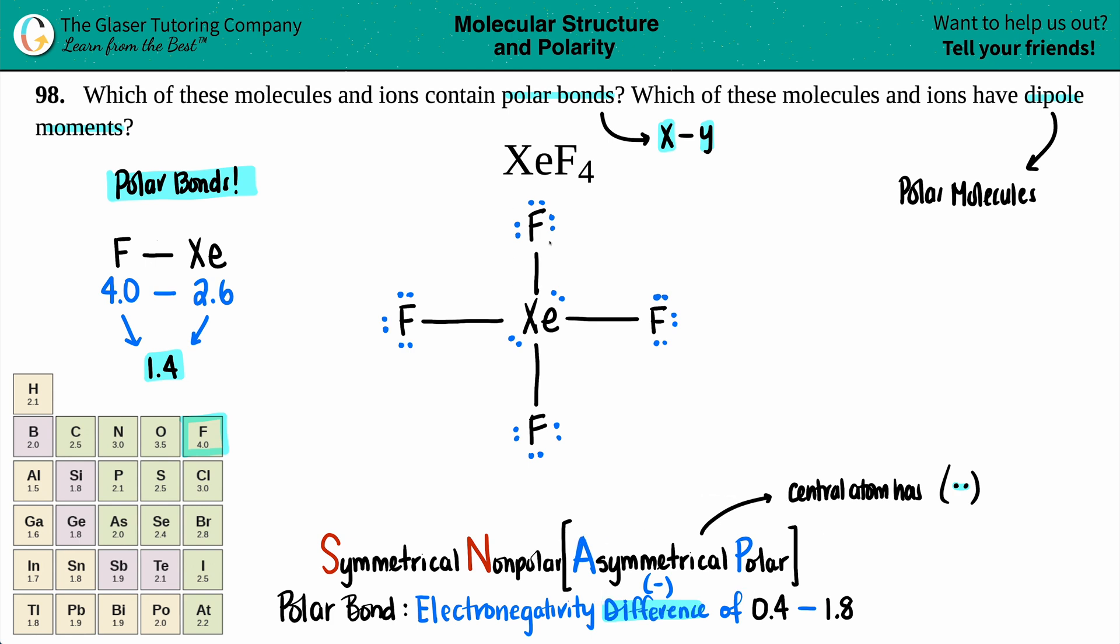So in this case, my central atom is xenon. And aha, it has four dots. You just have to have one, technically. So this guy's got four. So right off the bat, I don't even care that all these fluorines are the same. They look identical to trick you that maybe you would pick that it's nonpolar. But since the xenon has the lone pairs, it is automatically a polar molecule.